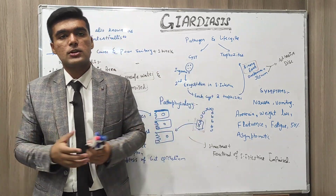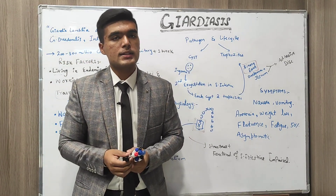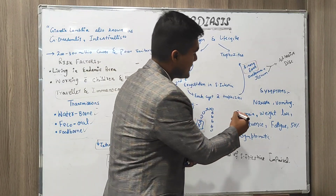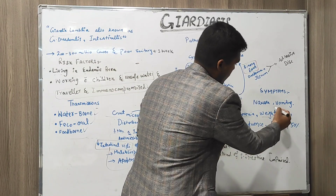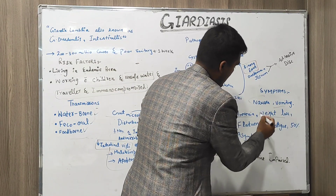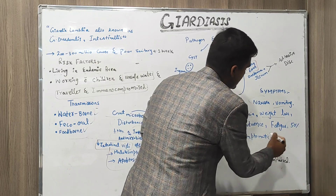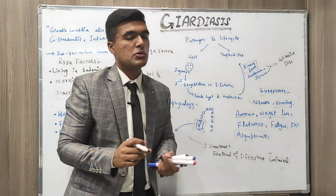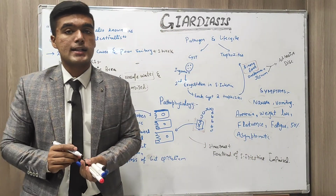Symptoms include diarrhea, flatulence, bloating, anorexia, weight loss, vomiting, and nausea. Notably, 50% of patients who have Giardiasis are asymptomatic.